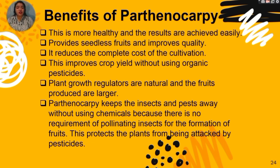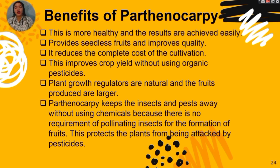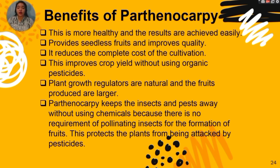Now let's go to the benefits of parthenocarpy. There are six benefits. First, it is healthier and the results are achieved easily. Second, it provides seedless fruits and improves quality. Third, it reduces the overall cost of cultivation. Fourth, it improves crop yield without using organic pesticides. Fifth, plant growth regulators are natural and the fruits produced are larger. Sixth, parthenocarpy keeps insects and pests away without using chemicals because there is no requirement for pollinating insects for the formation of fruits, thus protecting plants from insecticide use.